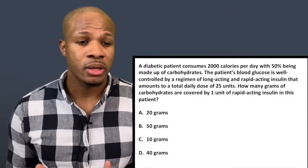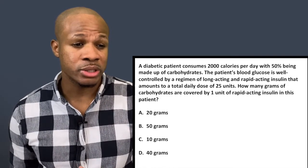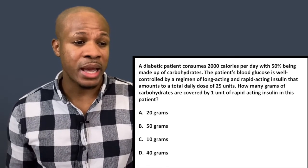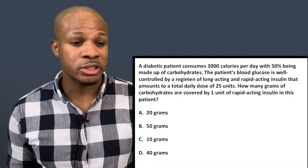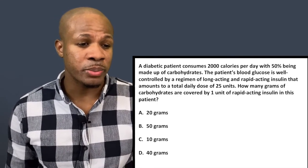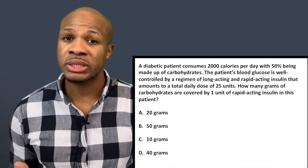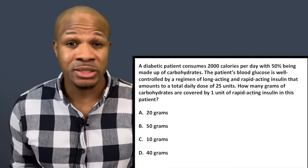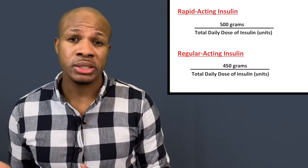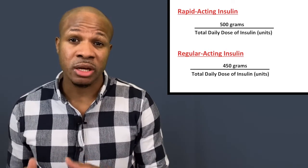Question number one states: a diabetic patient consumes 2,000 calories per day with 50% being made up of carbohydrates. The patient's blood glucose is well controlled by a regimen of long-acting and rapid-acting insulin that amounts to a total daily dose of 25 units. How many grams of carbohydrates are covered by one unit of rapid-acting insulin in this patient? This question might seem complicated, but it's pretty straightforward. It is a memorization question, but it's a very simple formula. The formula allows you to estimate the grams of carbohydrates covered by one unit of insulin.